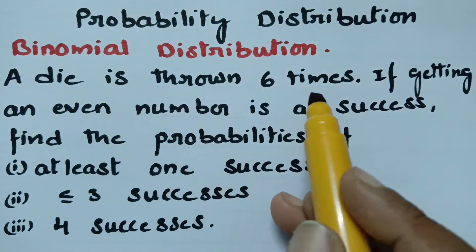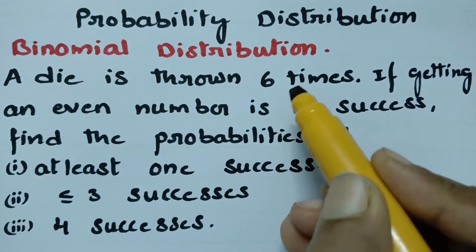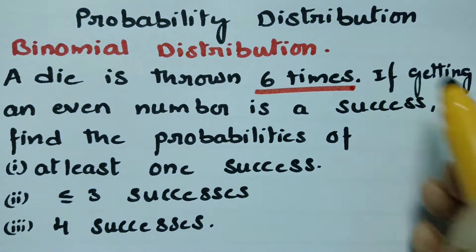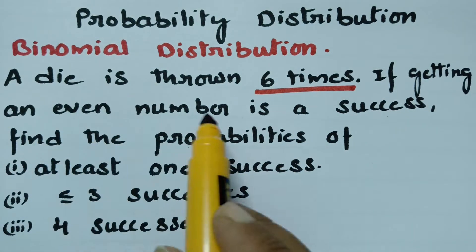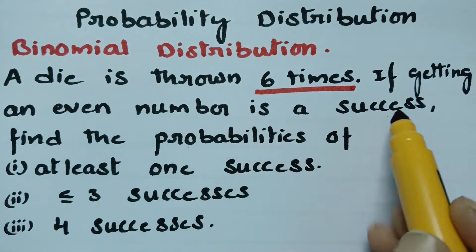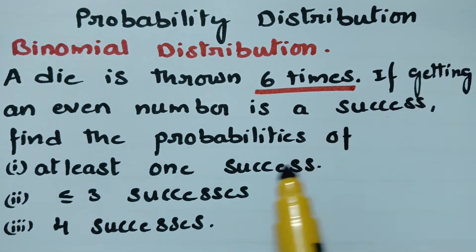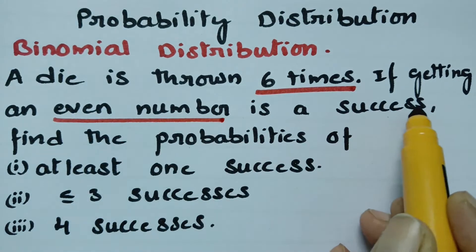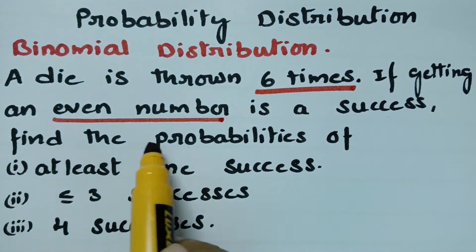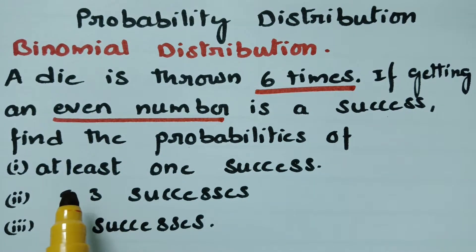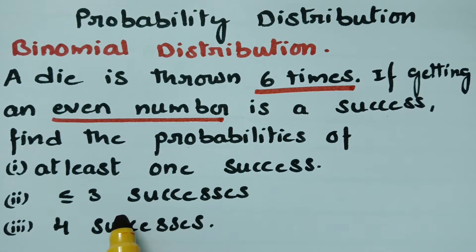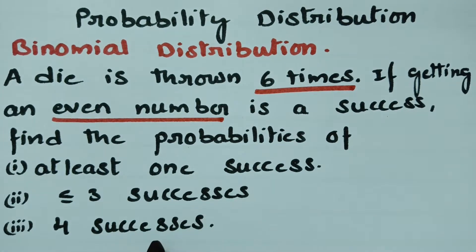A die is thrown 6 times, so the N value is equal to 6. If getting an even number is a success, find the probability of getting: at least 1 success, less than or equal to 3 successes, and exactly 4 successes.